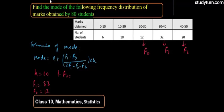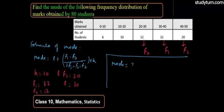F2 is 20, and L lower class is 30, so we'll substitute these values here.